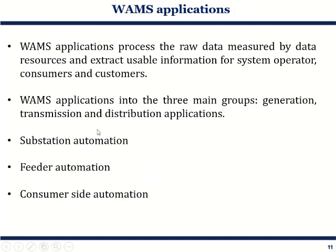Once the data is acquired and processed, it is used by different system operators or consumers. This data is applicable in three main groups: generation, transmission, and distribution. WAMS data can also be applied for substation automation, field automation, or consumer-side automation at various levels. That concludes the discussion on WAMS and communication infrastructure. Thank you very much.